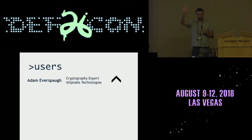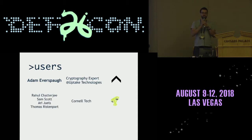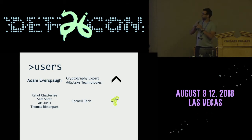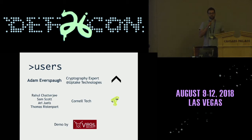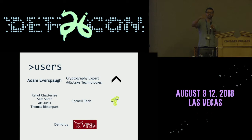First some introductions. I'm Adam Eberspaw. I'm the cryptography expert at a software technology company called Uptake in Chicago. But what I'm presenting today is some work I did when I was a PhD student at the University of Wisconsin. That's joint work with these gentlemen — some of these folks are here. Sam Scott is here in the audience, and all these folks are now at Cornell Tech. Lastly, I'm going to give a live demo of implementation of this technique later in the talk, and that live demo was developed by Virgil Security, who actually has an open source version of this. The founder of Virgil, Dimitri Dain, is here. If you have any questions about the software or the technology, come talk to me afterwards and I'll introduce you to Dimitri.